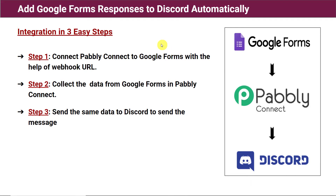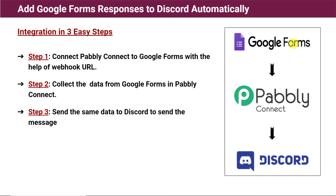First, you have to visit PablyConnect. In step one, you are going to connect PablyConnect to Google Forms with the help of a webhook URL — simply, you will copy the webhook URL from PablyConnect and paste it into Google Forms. In step two, you are going to collect the data from Google Forms in PablyConnect — you will make a submission in Google Forms and that submission data will be collected in PablyConnect.